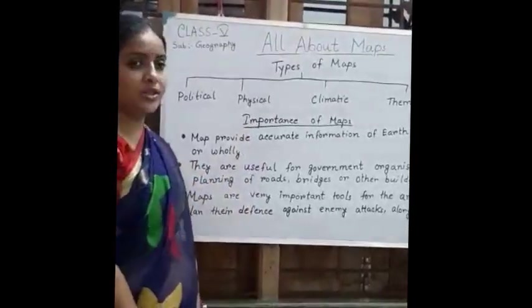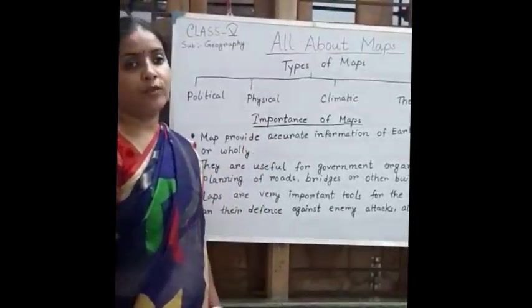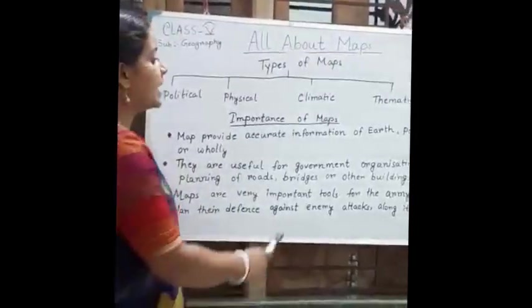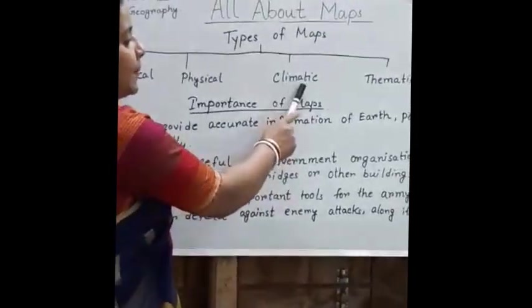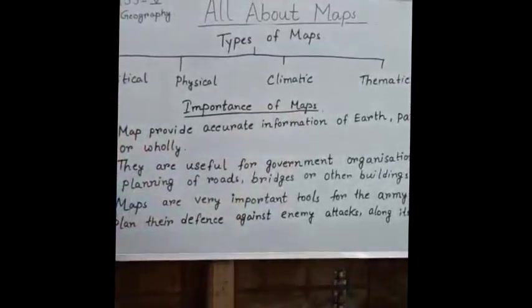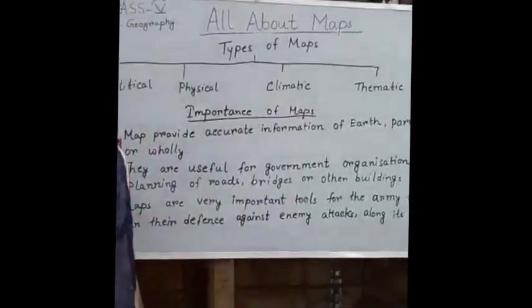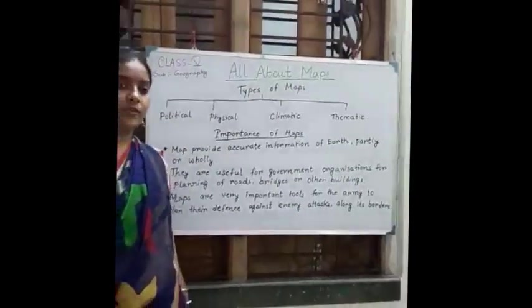Next is physical map. This map shows landform and water bodies through various colors. Next, come to climatic map. This map shows the weather conditions such as temperature, pressure, rainfall, etc.